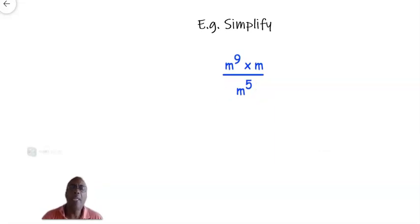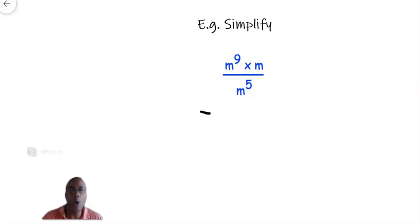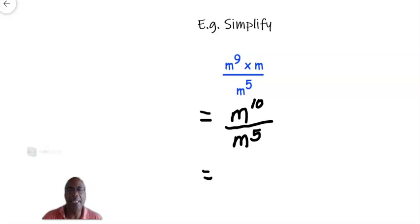Let's look at this example — a combination of multiplication and division. We have m to the power of 9 times m, divided by m to the power of 5. The m alone is just m to the power of 1. To get the answer, look at the top first: m to the power of 9 times m to the power of 1 — we add the powers and get m to the power of 10. Over m to the power of 5, since we are dividing indices to the same base, we subtract: 10 minus 5 is 5. Answer: m to the power of 5.